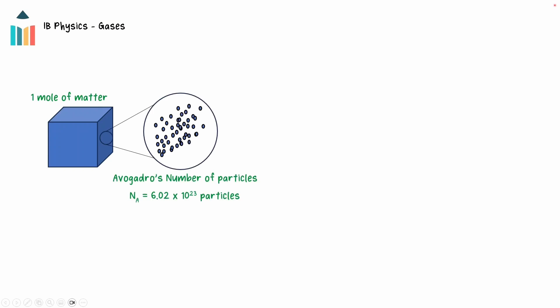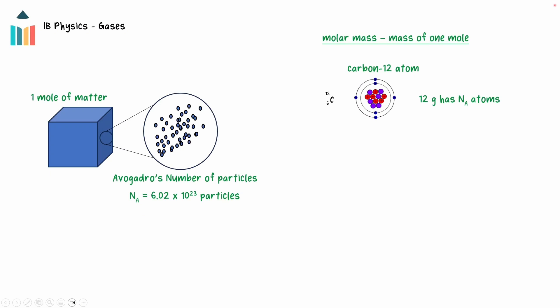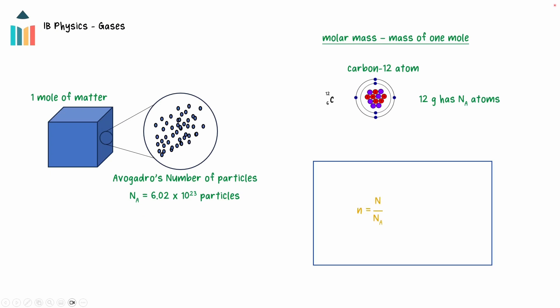The SI unit for amount of matter is the mole. A mole is the amount of matter that contains Avogadro's number, 6.02 times 10 to the 23, of particles. For example, a mole of water is 6.02 times 10 to the 23 water molecules. The molar mass is the mass of a mole of a substance; the molar mass of carbon-12 is 12 grams per mole. A lowercase n is used for the amount of moles and capital N for the number of particles, related by the formula n equals N divided by NA, where NA is Avogadro's number.